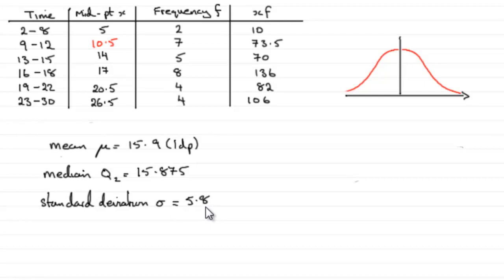...that it's known that if you take your mean, which in this particular example is 15.9, and you go two standard deviations above and below the mean, it should encompass the majority of data.